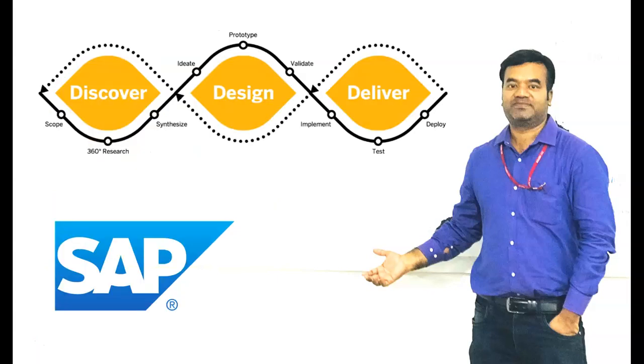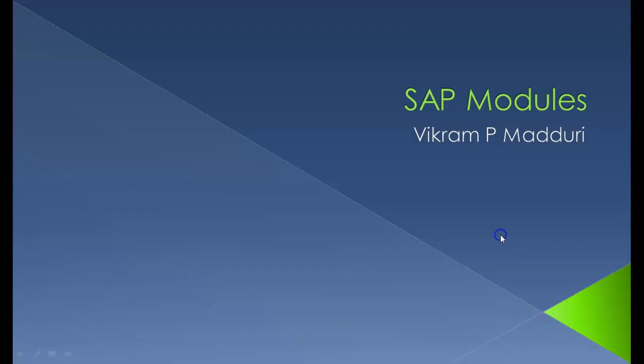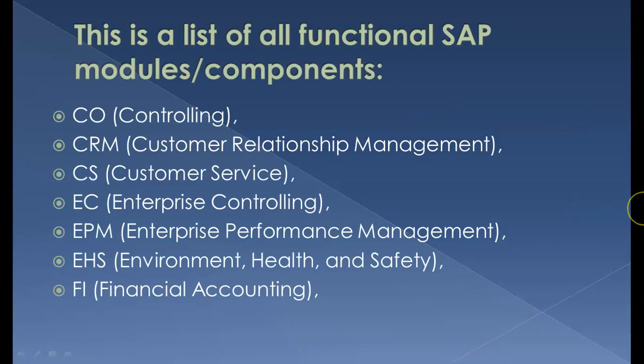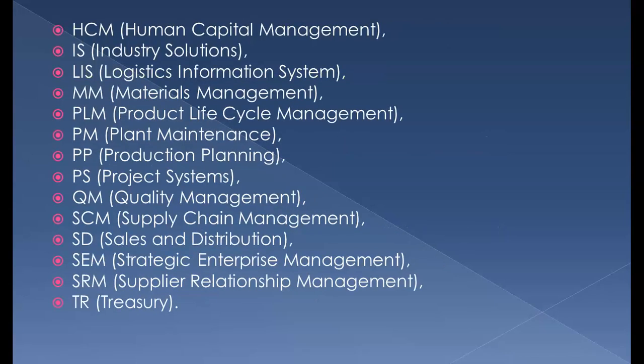CO stands for Controlling, CRM is Customer Relationship Management, CS is Customer Service, EC is Enterprise Controlling, EP is Enterprise Performance Management, EHS is Environment Health and Safety, FI is Financial Accounting, and HCM is Human Capital Management.